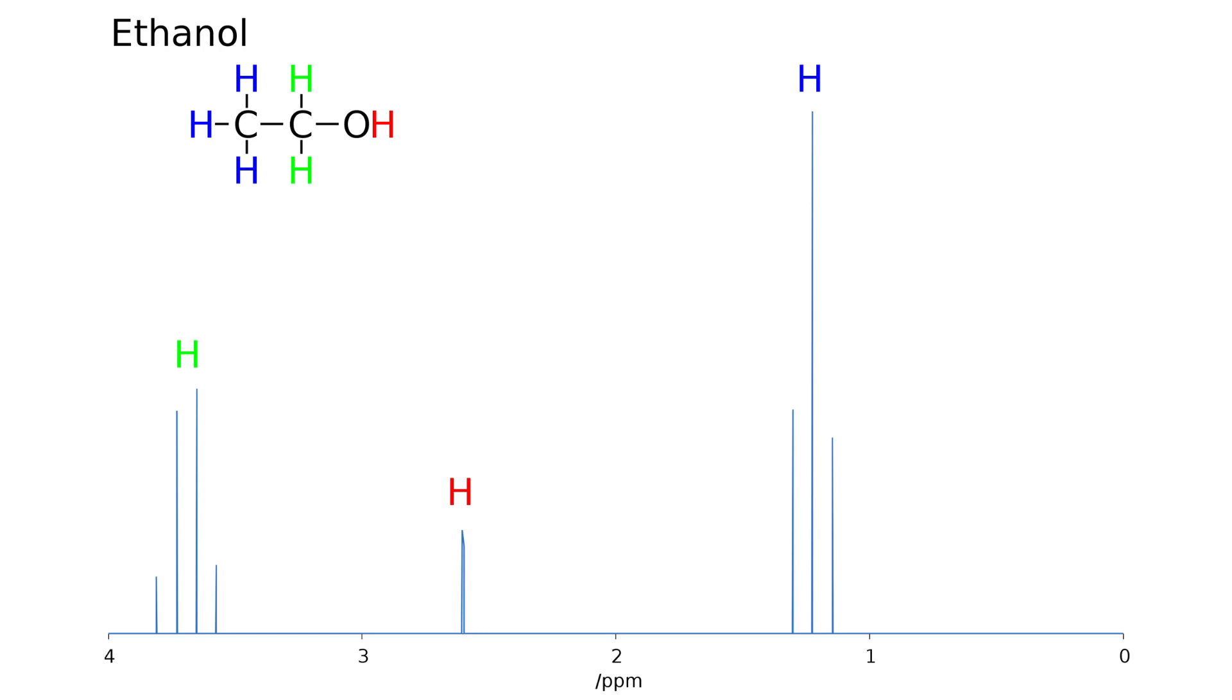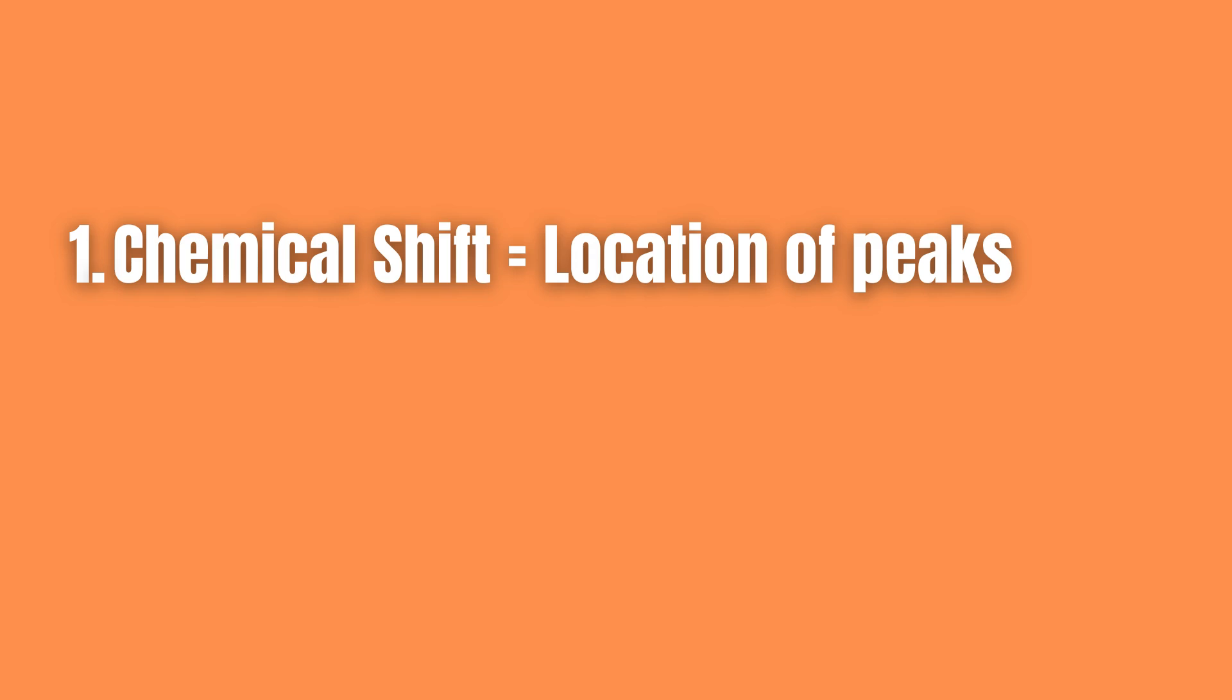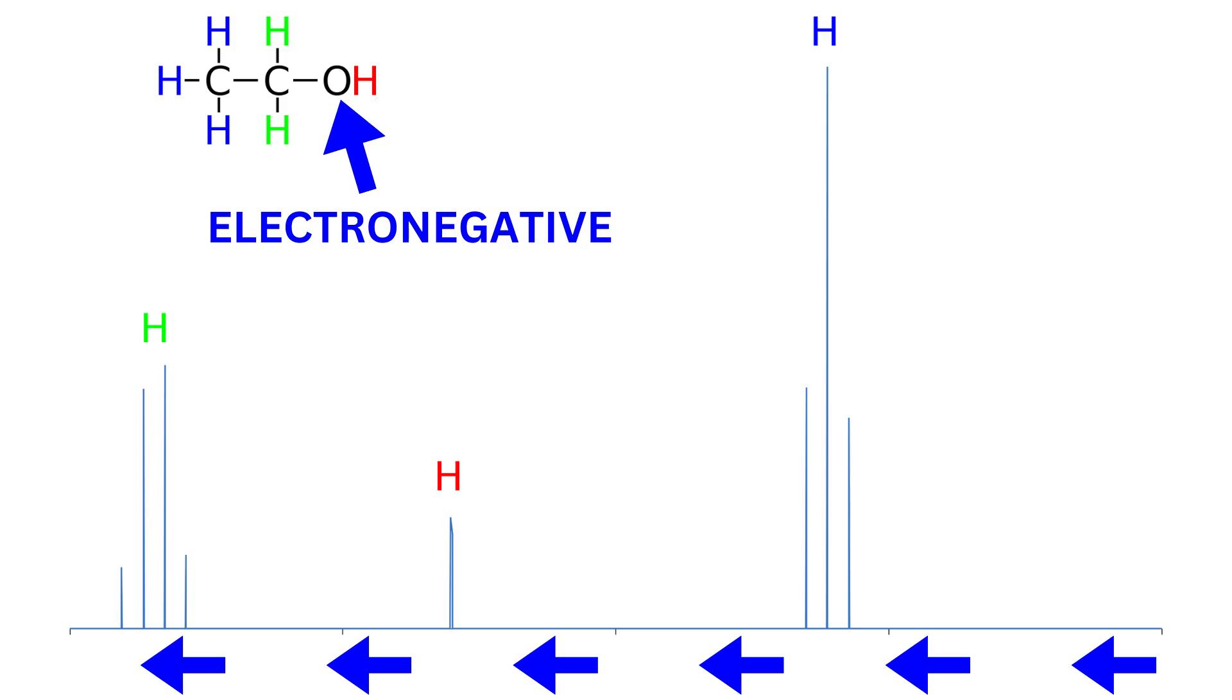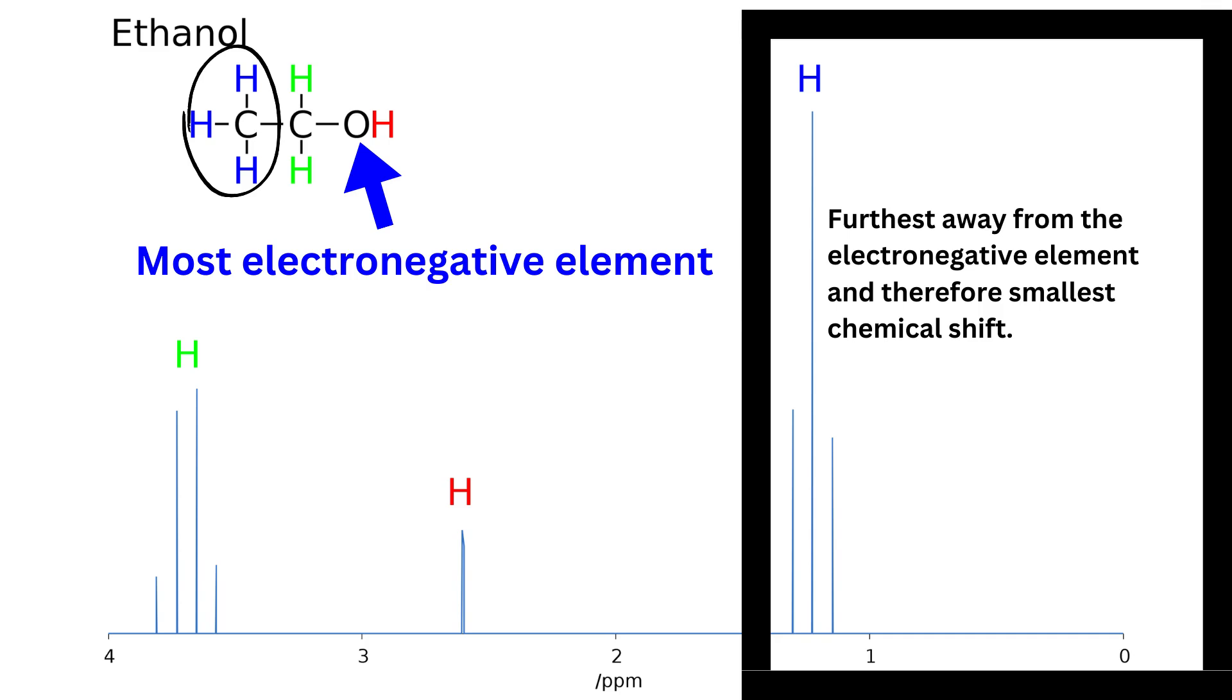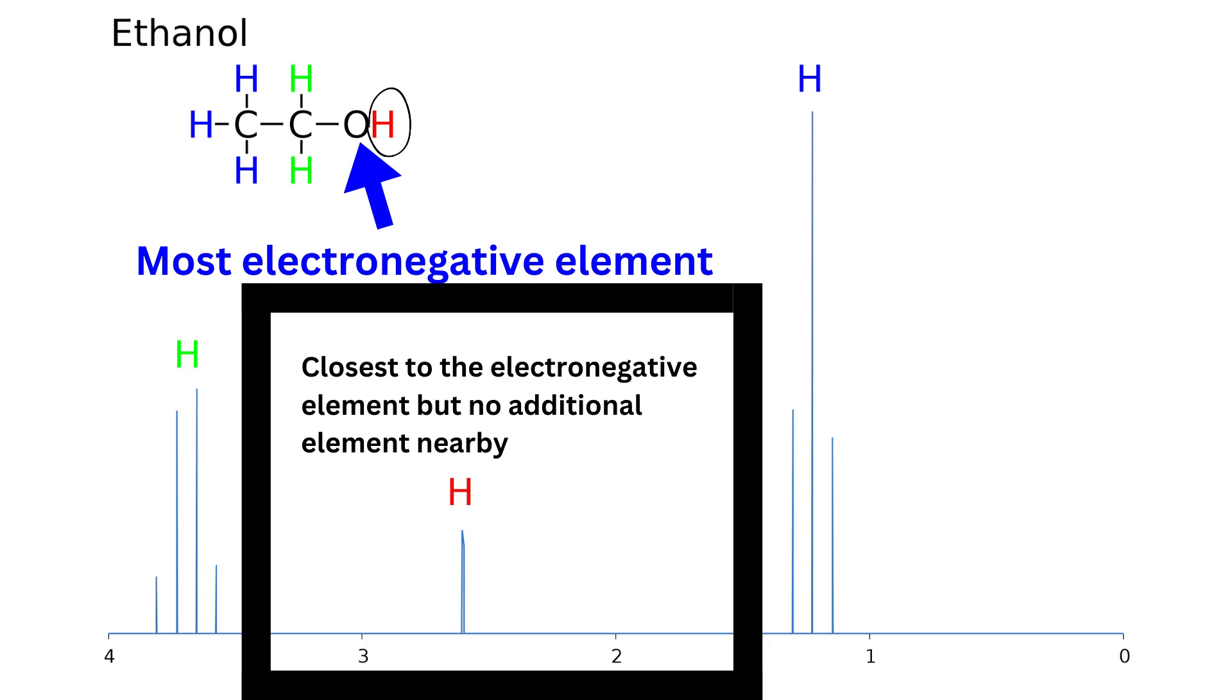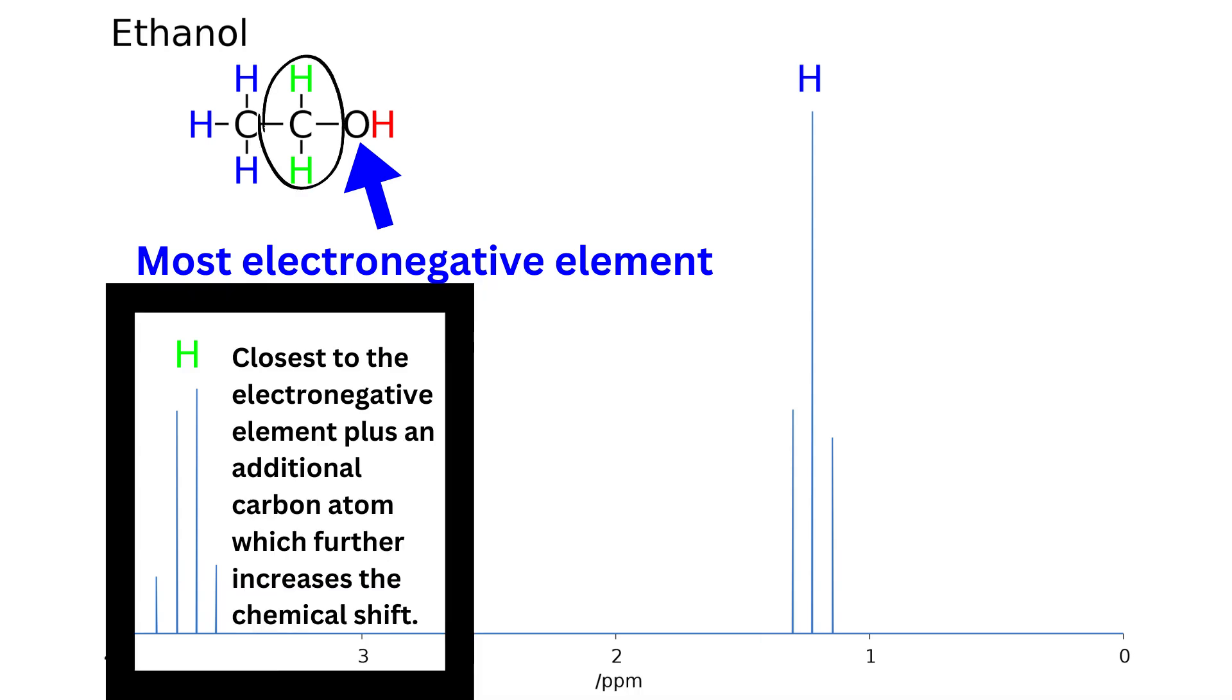When interpreting an NMR spectrum, you want to consider three things. First is chemical shift, which has to do with the location of the peak in the spectrum. The chemical shift is inversely proportional to the distance between the proton and the electronegative elements. More simply put, protons that are closer to any electronegative elements are more chemically shifted to the left.